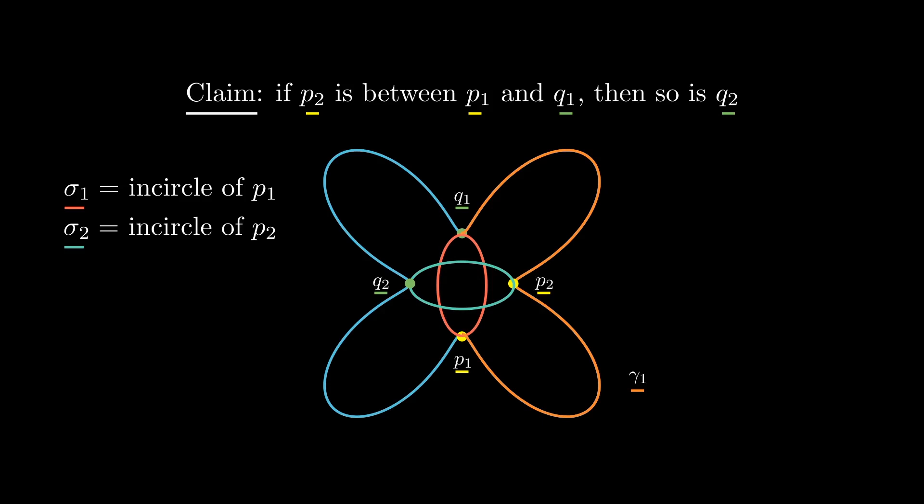That would imply that sigma1 and sigma2 are actually the same circle. However, by construction, p2 lies in sigma2 but not in sigma1. This proves our claim that q2 also lies in gamma1, the portion of gamma between p1 and q1, where p2 lies.